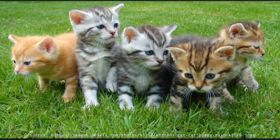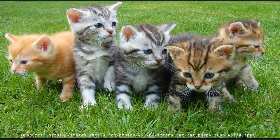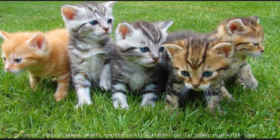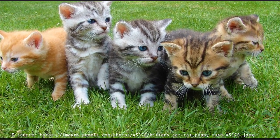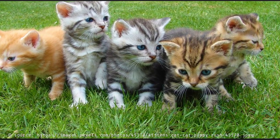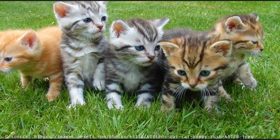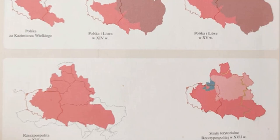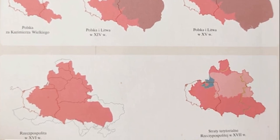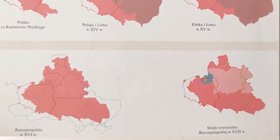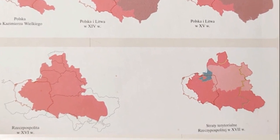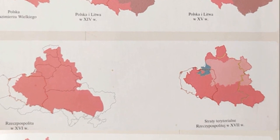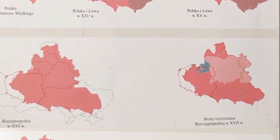This next part is fascinating: marsupials, so commonly associated with Australia, actually originated in Southeast Asia. They migrated through the Americas, Antarctica, and finally arrived in Australia. Shifting to the plant world, conifers started as the dominant form of tree, but they got new competitors — flowering plants, or angiosperms, came onto the scene about 130 million years ago and eventually dominated the Cretaceous period.